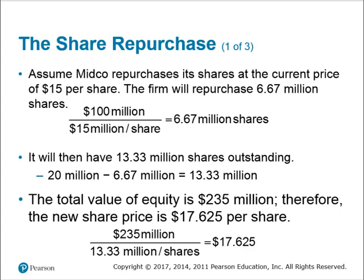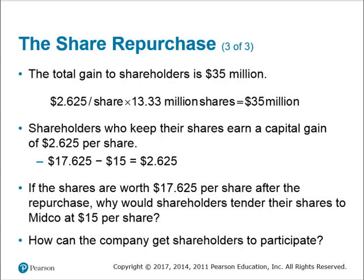Wait a minute — didn't that increase? The total gain to shareholders is $35 million. If you take $2.625 — the earnings they had — and multiply it by 3.3 million shares, that's $35 million. The shareholders that keep their shares are going to earn a capital gain of $2.63. So if the company buys back shares at $15, when they're done, the shares left over are automatically going to be worth $17.